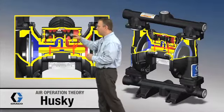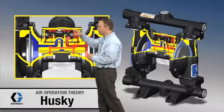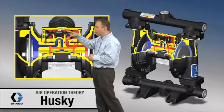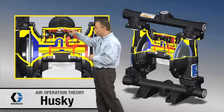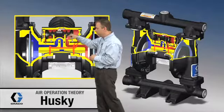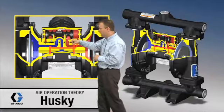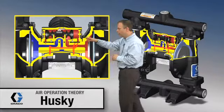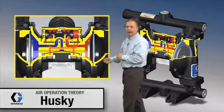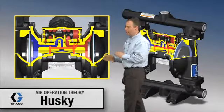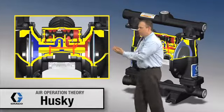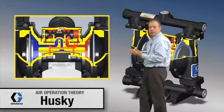Right now we've got high pressure air existing in this module, this air valve, and it's piped down through here and all the way back to the backside of that diaphragm. And that's what's causing that diaphragm, in this case, to move in this direction.